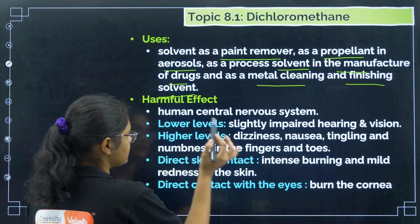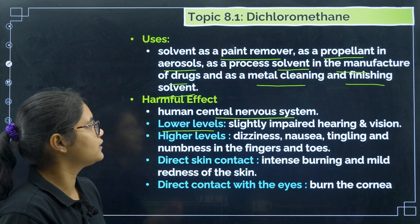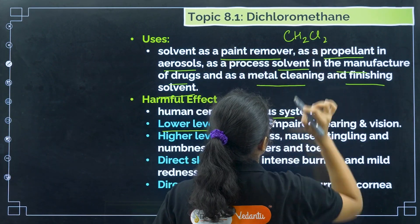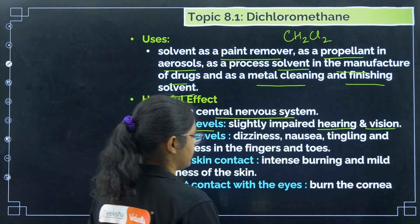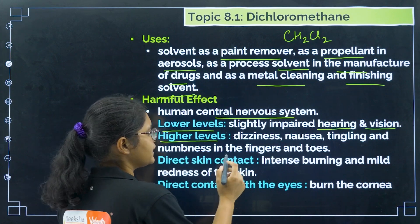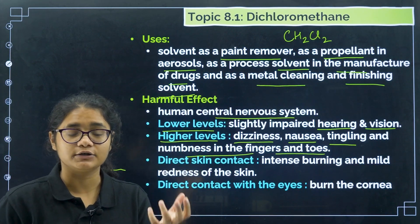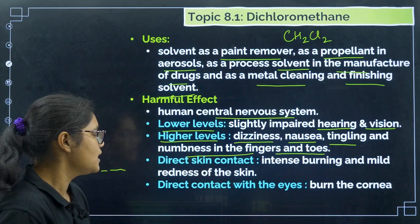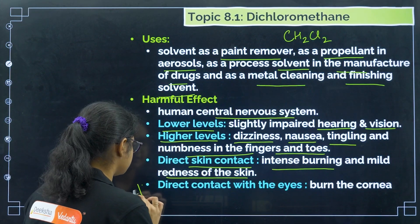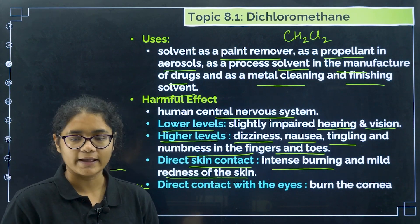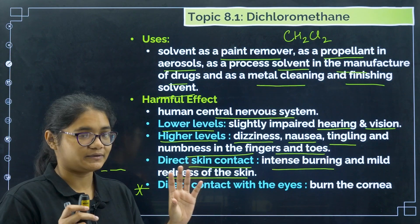Now the harmful effects of dichloromethane (CH₂Cl₂): it is harmful to the central nervous system of human beings. When exposed to a lower level, you will have symptoms like impaired vision and impaired hearing. At a higher level of exposure, you can get dizziness, nausea, tingling and numbness in the fingers and toes. If you have direct skin contact, it may cause intense burning and mild redness of the skin. It is very dangerous if it contacts the eyes — it can even burn your cornea. It is a very harmful and dangerous chemical.